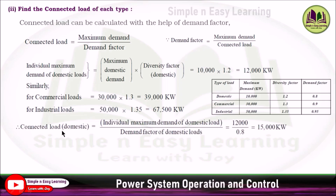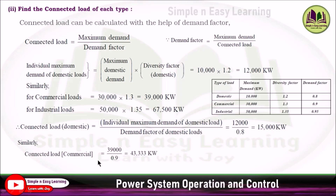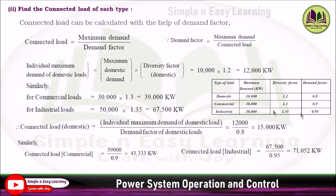The connected load for domestic equals the individual maximum demand of domestic (12,000) divided by the demand factor from the table, which is 0.8, giving 15,000 kilowatt. Similarly, connected load for commercial is 39,000 divided by demand factor 0.9. Connected load for industrial is 67,500 divided by 0.95, giving 71,052 kilowatt. This is how you calculate the connected load of each type.